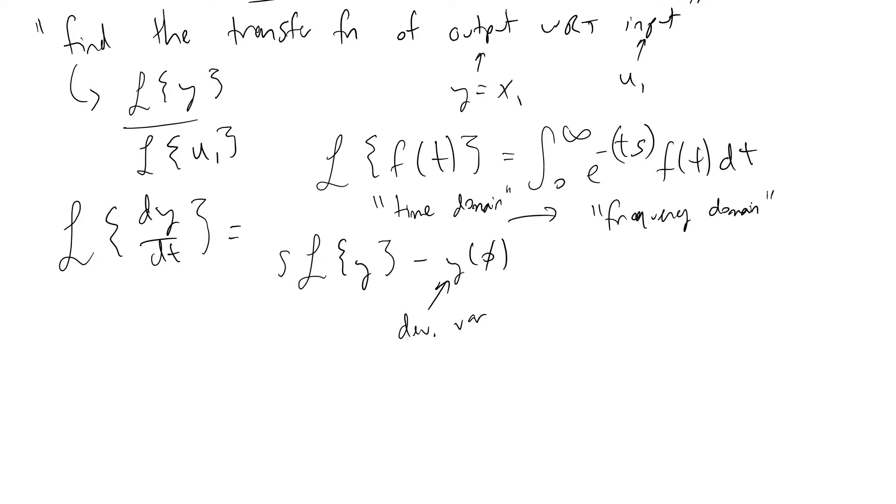We assume our system is initially at steady state. What that tells us is that this term here is equal to zero. So we can generally cancel those terms.